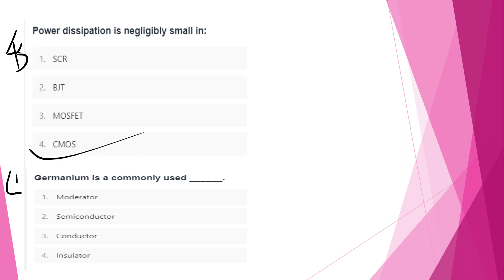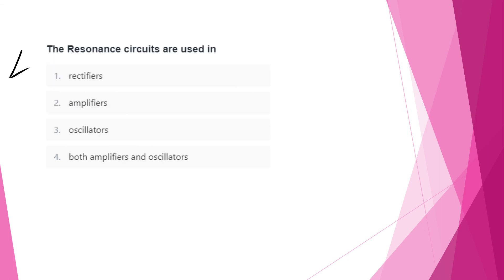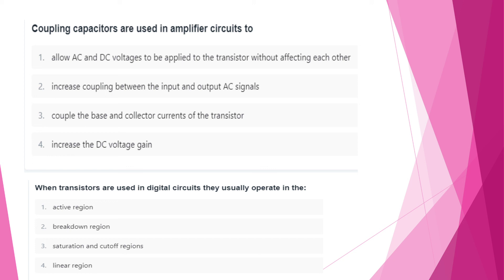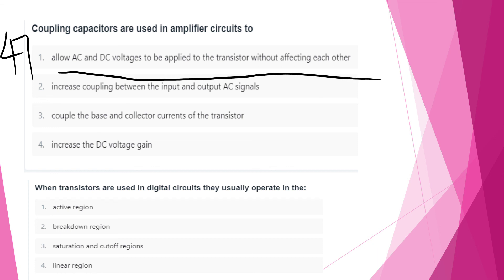CMOS is commonly used. Germanium is commonly used as a semiconductor. Resonant circuits are used in both amplifiers and oscillators. Coupling capacitors are used in amplifier circuits to allow AC voltage while blocking DC, so AC and DC voltages can be applied to the transistor without affecting each other.